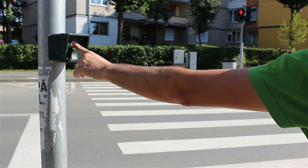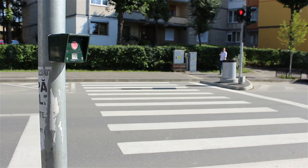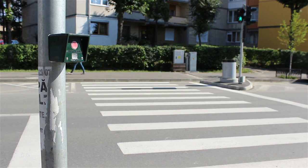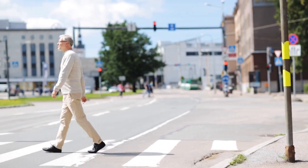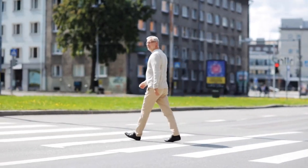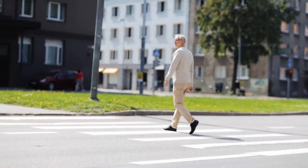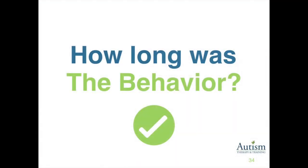Let's practice latency. You'll see a video of someone crossing the street. Start the timer when the walk symbol appears and stop it once the person starts walking. If you got six seconds, then you're absolutely right.